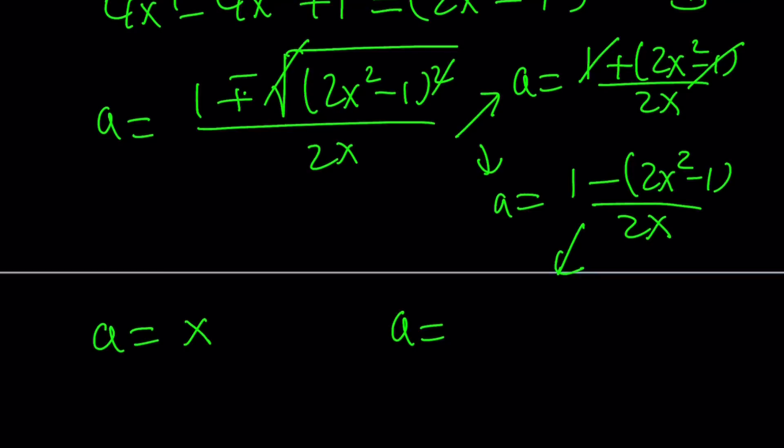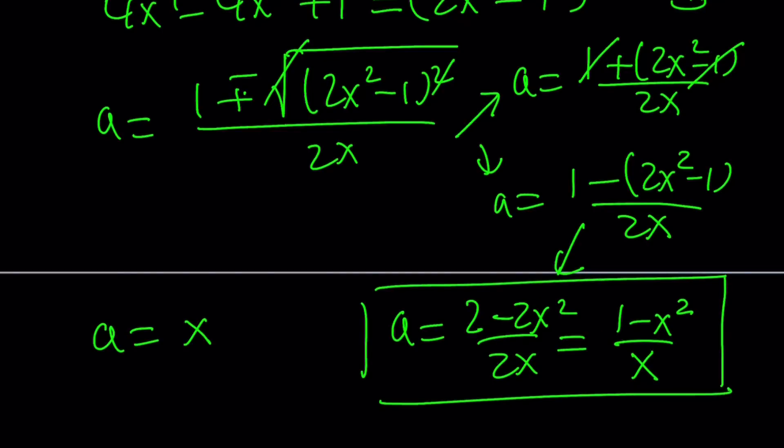We can go ahead and write it as 2. 2 minus 2x squared divided by 2x. And we can basically divide both the numerator and the denominator by 2 and write this as (1 minus x squared) divided by x. So we solved the quadratic in terms of x. We got the a values in terms of x.